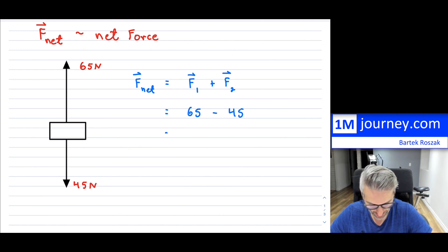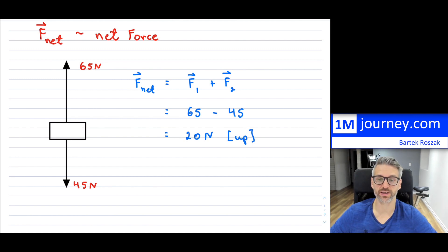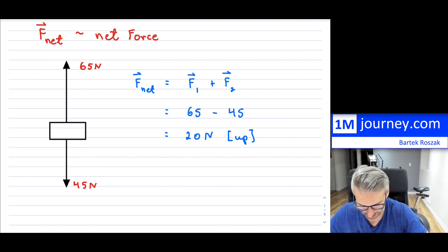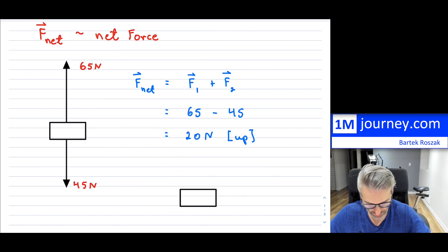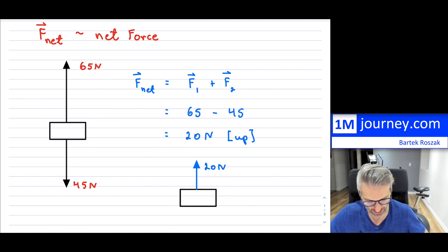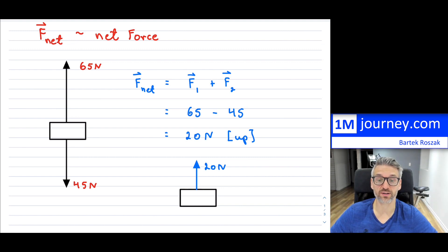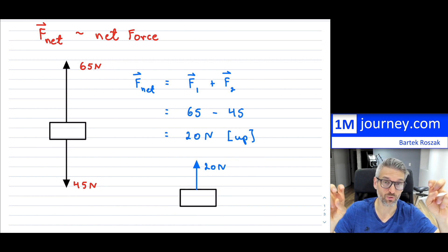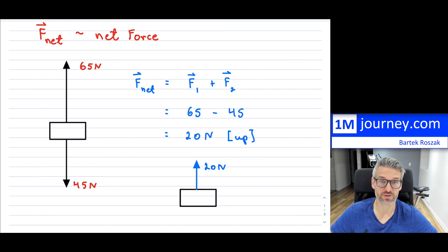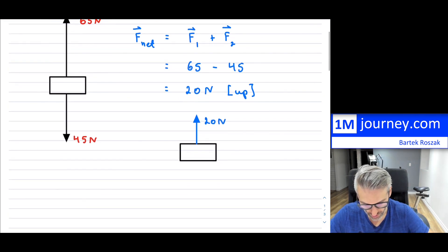Because they're in one dimension — the same line — we can add them. Making upward positive, I take the magnitude of 65 and subtract 45 since it's in the opposite direction, giving 20 Newtons upward. So the overall net force on this object is 20 Newtons up. That's not one individual force — it's the summation of the two forces we had. That's the key thing to understand about net forces.